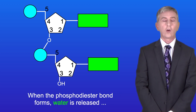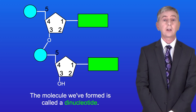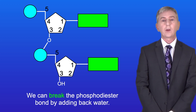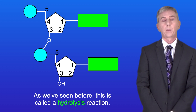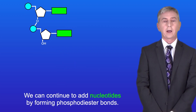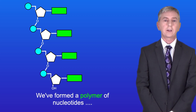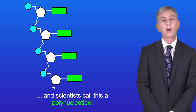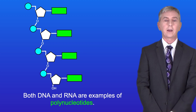When the phosphodiester bond forms, water is released, so this is an example of a condensation reaction, and the molecule we've formed is called a dinucleotide. We can break the phosphodiester bond by adding back water — this is called a hydrolysis reaction. We can continue to add nucleotides by forming phosphodiester bonds, creating a polymer of nucleotides called a polynucleotide. Both DNA and RNA are examples of polynucleotides.